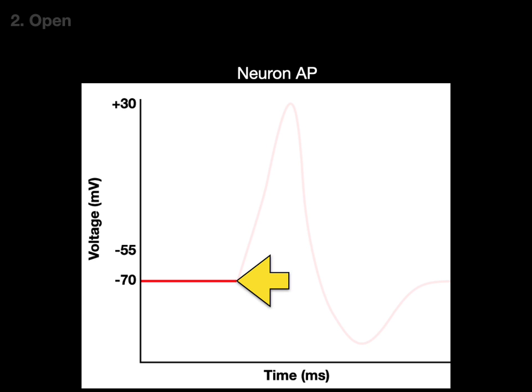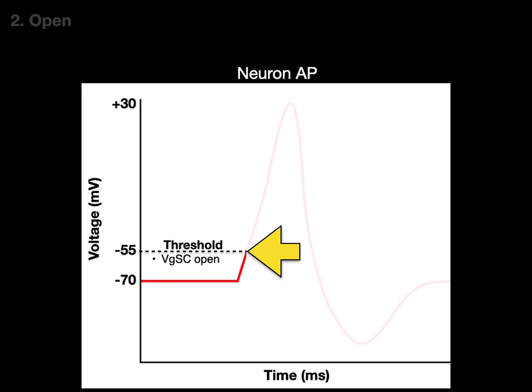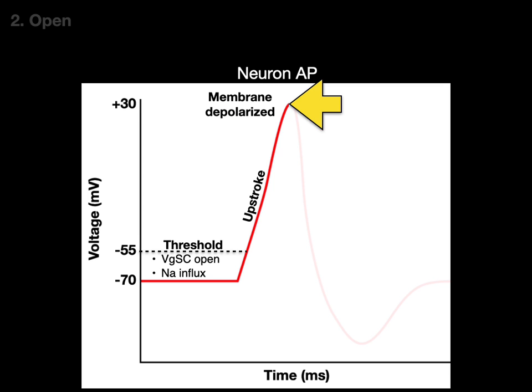An approaching action potential depolarizes the membrane to -55 millivolts — that is threshold. When threshold is reached, the voltage-gated sodium channels open and there is an influx of sodium. Those picomoles of positively charged sodium ions cause the internal surface to go from -70 to +30 millivolts. This is the upstroke of the neuronal action potential, or when the membrane depolarizes.